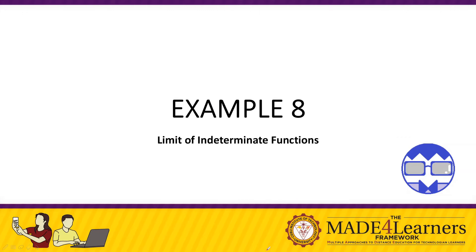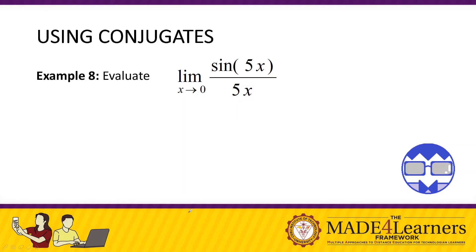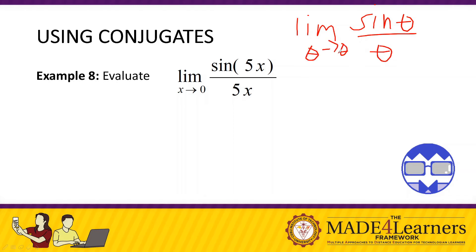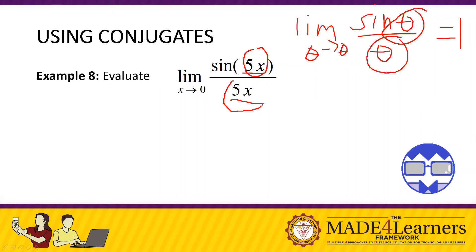Example 8: Evaluate the limit of sin(5x) over 5x as x approaches zero. We are going to use the theorem: limit of sin theta over theta as theta approaches zero equals one. The condition is that as long as the angle and the denominator have the same expression, the answer will be one. Here, the angle 5x equals the denominator 5x, so the answer is simply one.